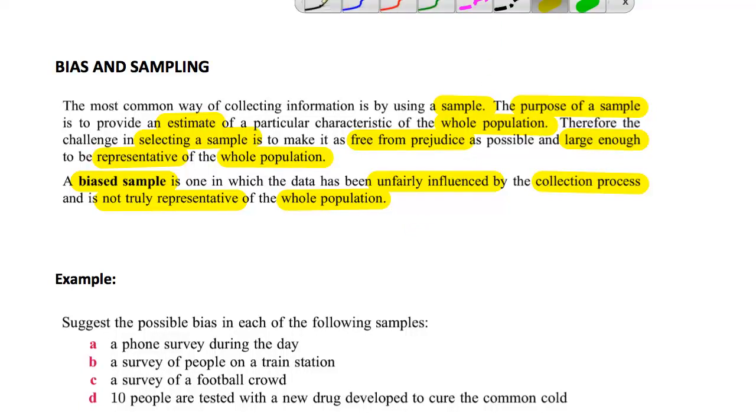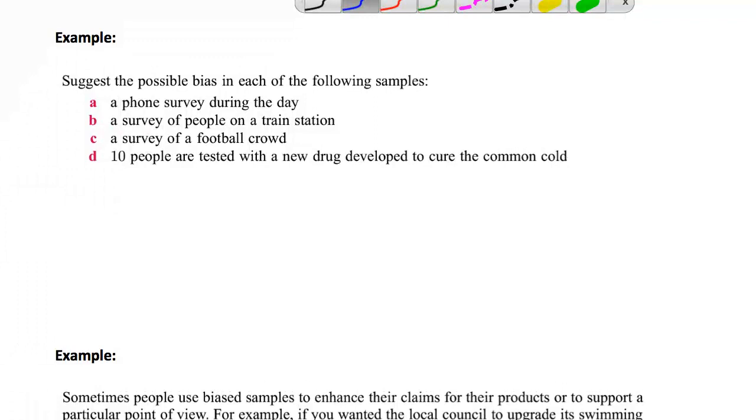Now let's have a look at a couple of situations to see what sort of bias may be involved. We're looking at possible bias or unfairness with the samples. Let's have a look at the first one: you do a phone survey during the day. You may even want to pause the video at this stage and talk about what possible reasons these could have for being biased.